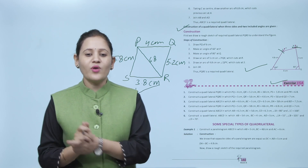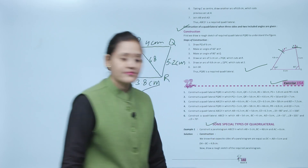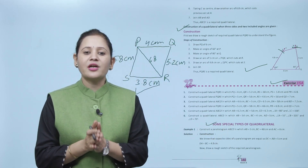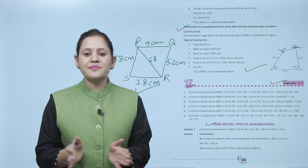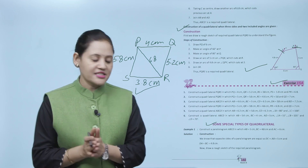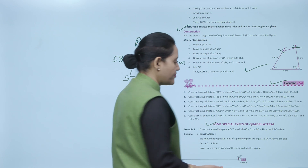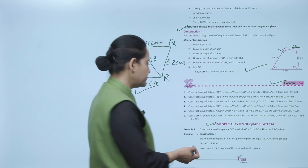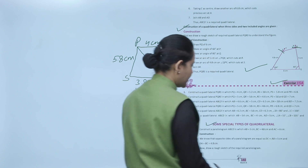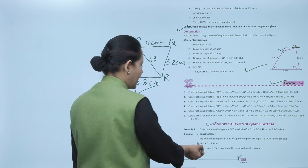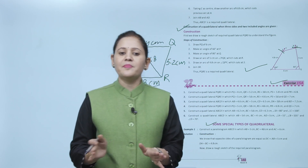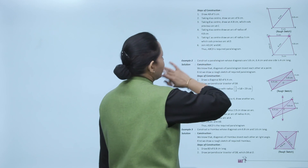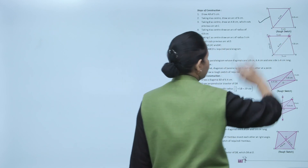Next are some special types of quadrilaterals. We will take an example: construct a parallelogram ABCD in which AB = 5 cm, BC = 4.8 cm, and AC = 6 cm. We know the opposite sides of a parallelogram are equal, so DC = AB = 5 cm and DA = BC = 4.8 cm. We draw a rough sketch of the required parallelogram.